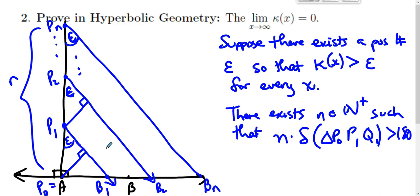And because defects are additive, that implies each of these little triangles here have a defect. That implies that the defect of triangle P0, Pn, Bn is greater than 180. And that's a contradiction.